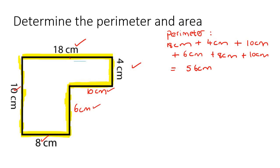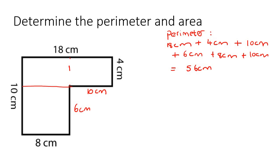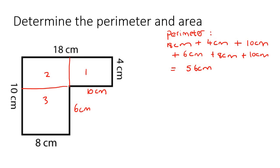You're not going to say 56 centimeters squared — that's only for area. Speaking of area, that's what we have to do next. For area, you cannot find the area of this shape in one step because it is not a common shape — it's not a rectangle, it's not a triangle. But what we can do is put a line there, and all of a sudden we have two rectangles. There are many ways you could split it — you could even make three rectangles — but at the end, all of our answers are going to be the same. So I'm just going to do it this way.